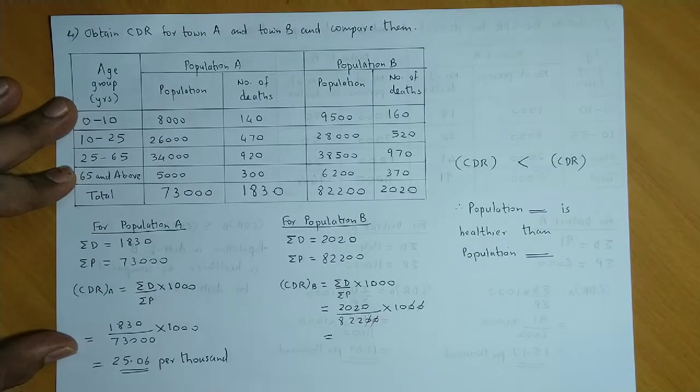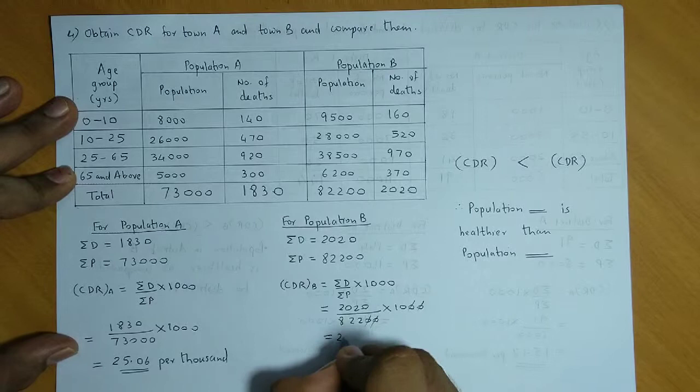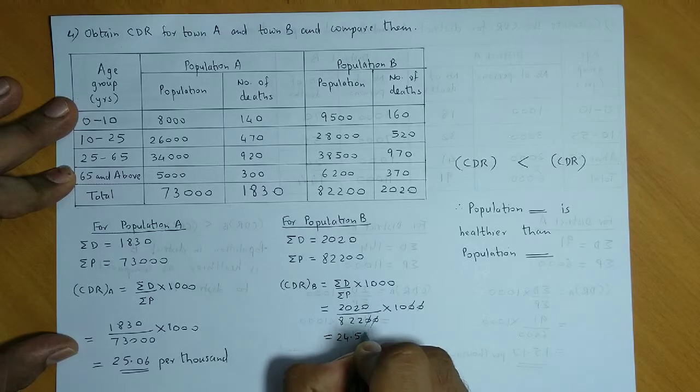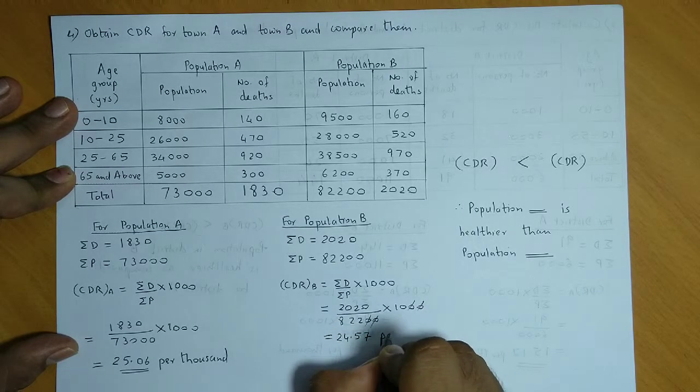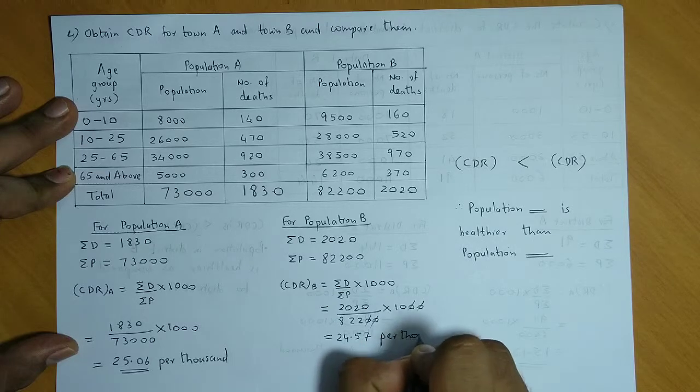Which is 24.57. Again, units are per 1,000.